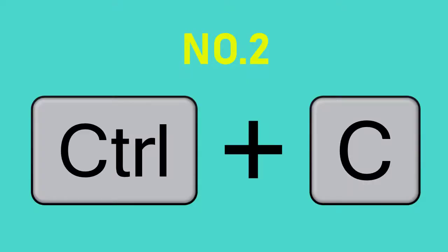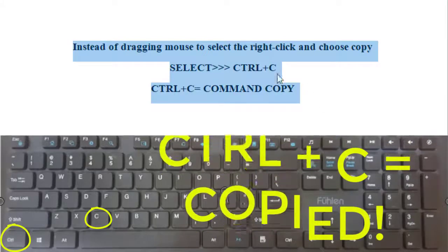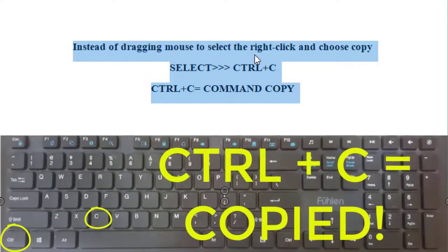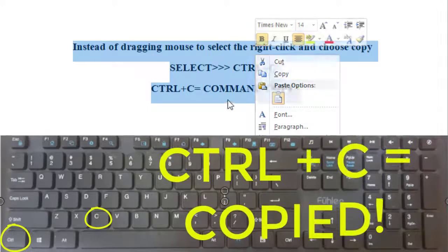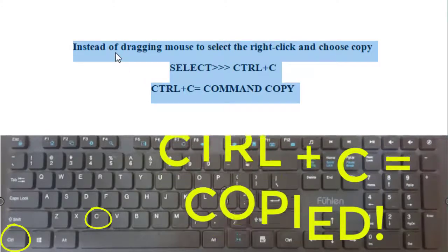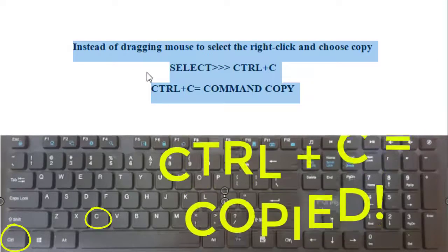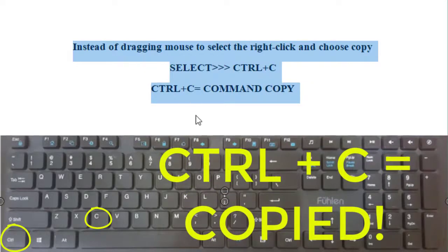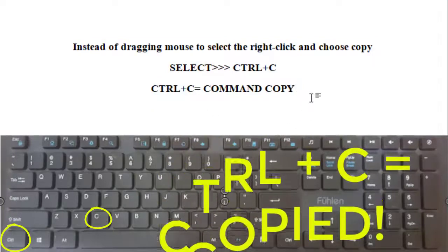Number 2: CTRL and C — Copy command. C is for copy, not for cut. It copies from one place and pastes it onto another — like a clone. This shortcut allows you to duplicate the current version of some items and keep it ready. The copy command won't go anywhere until we reach number 3.